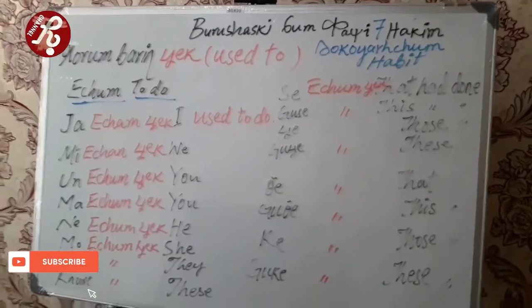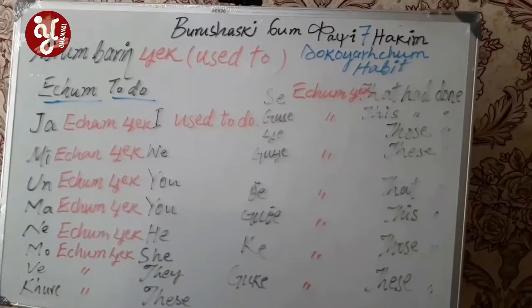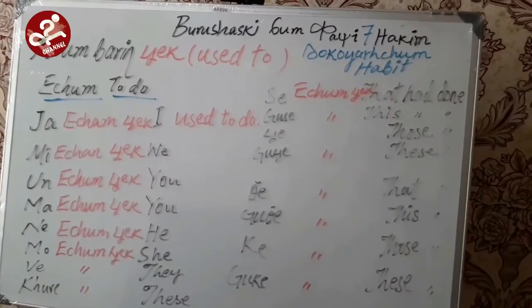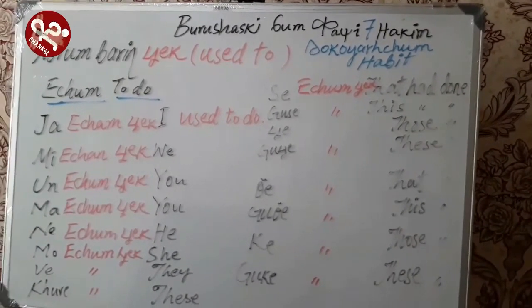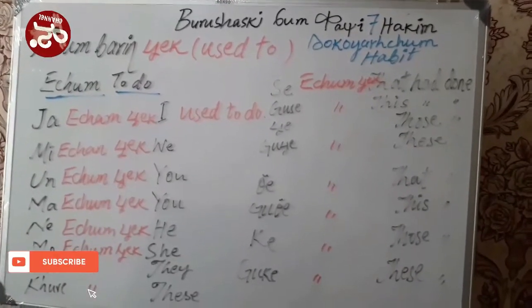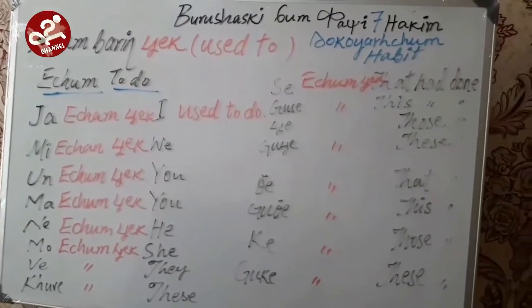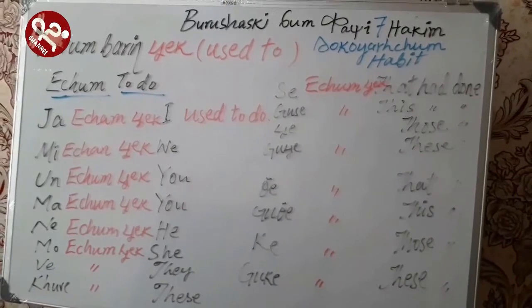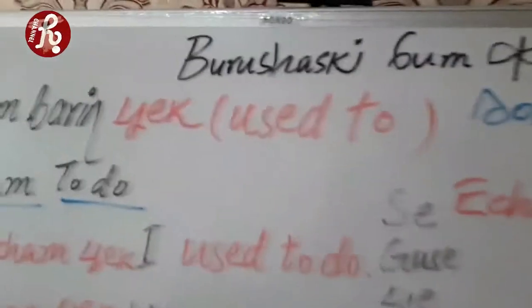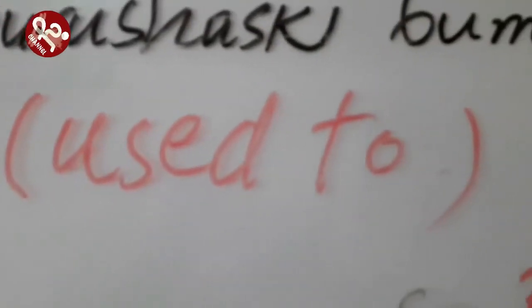You will use the word 'check' to express the past tense — things that you used to do in the past. You used to write, you used to sleep, you used to eat, you used to drink, or you used to fight — whatever you did in the past will be expressed with the word 'check.' So 'check' means 'used to,' and this is about a past habit.